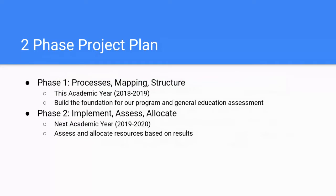As a reminder of our two-phase project plan: this first phase is process mapping and structure, covering this academic year — this fall semester and next spring semester — really focusing on building that foundation for both program and general education outcomes assessment. The next academic year, fall 2019 to spring 2020, will focus on implementing our processes, assessing, and allocating resources based on those results.